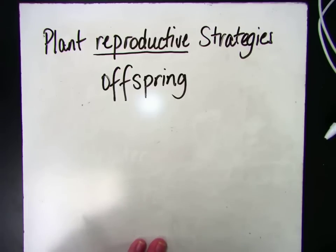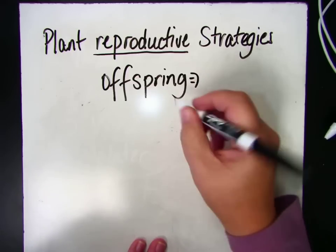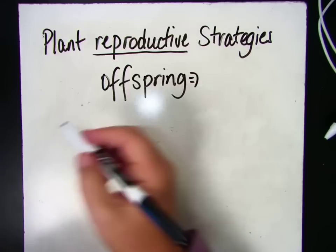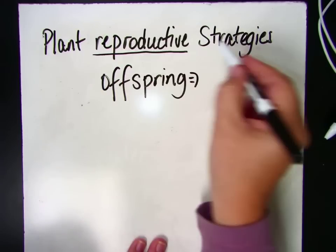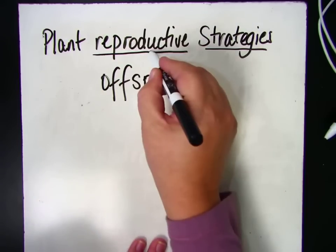So you're an offspring, your parents are an offspring, your grandparents are an offspring. Anything that's living is an offspring — that's just like the baby of somebody else. So plants use different strategies or ways to reproduce.